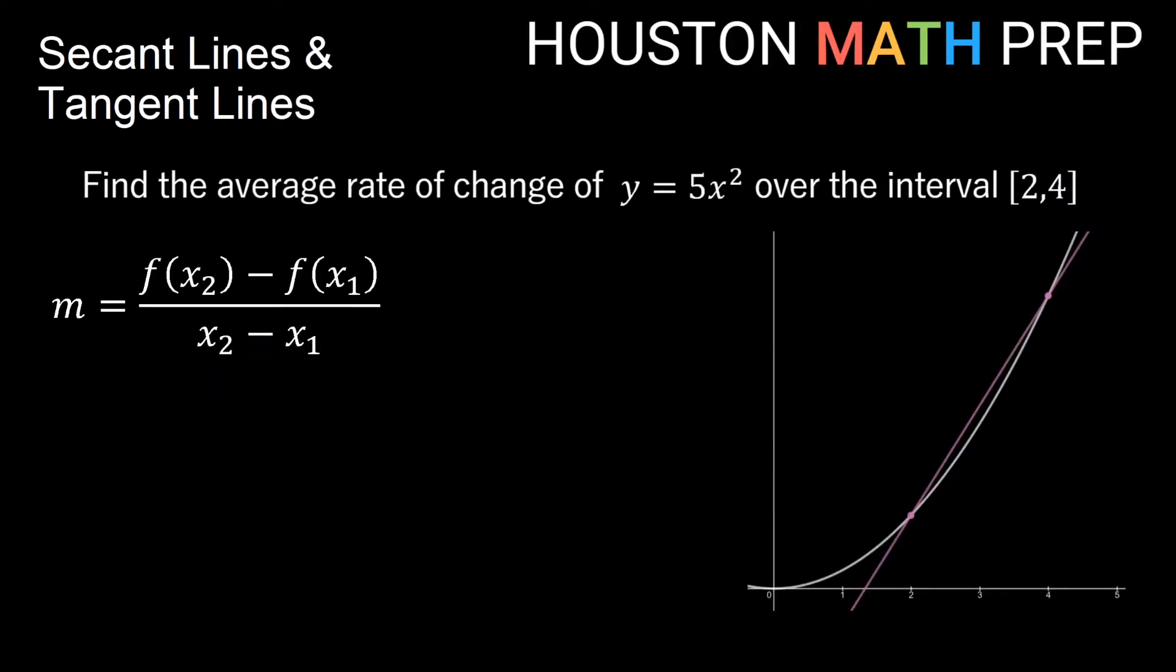Let's say we wanted to find the average rate of change of y equals 5x squared over the interval x equals 2 to x equals 4. We want to figure out what's the average rate of change on this function over this interval. So I know that this is my x1 and this is my x2. That's the left side of my interval and the right side of my interval. What I need to do is plug in these x values and find my y values.